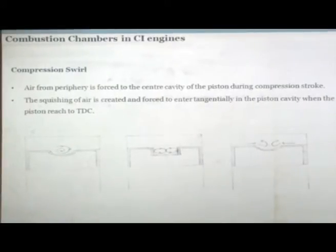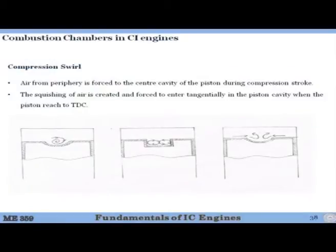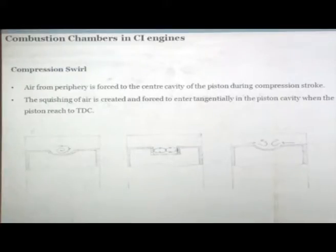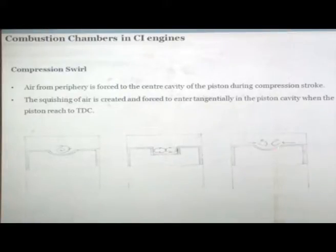Then comes compression swirl. The swirl generated during the compression stroke is called compression swirl. In compression swirl, the air from the periphery is forced into the central cavity of the piston during the compression stroke. If you have a cavity in the center and the piston is moving up, this area is smaller and this area is larger. So there is a tendency for air to enter the central cavity in a circular fashion — this is compression swirl. The squishing of air is forced to enter tangentially into the piston cavity when the piston reaches TDC. This is also called squishing.